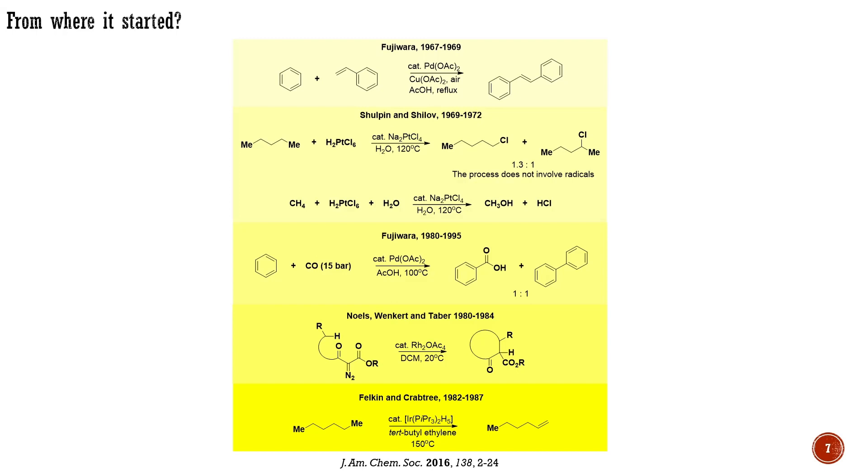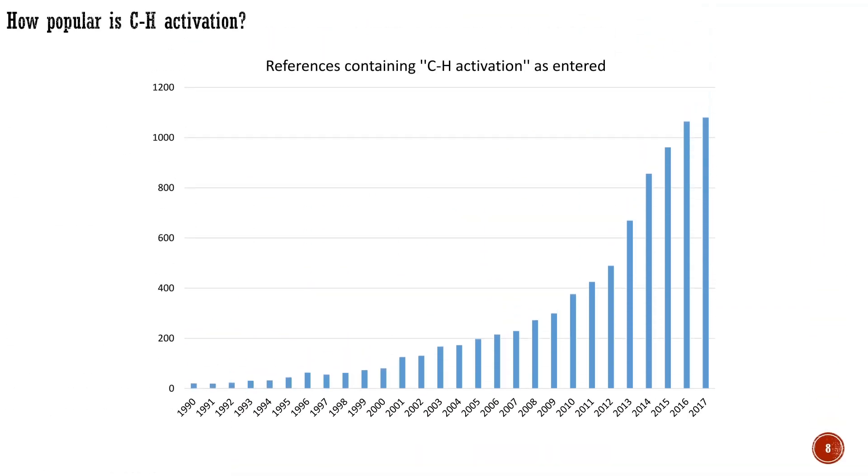Now, let's see how popular this topic is and why it became so popular. On this chart, one can observe the number of publications per year in the field of C-H activation. The number of articles has been growing exponentially, especially within the last decade, crossing the threshold of 1,000 articles per year for 2016 and 2017.